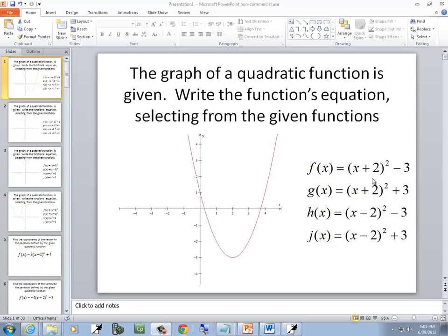Now, if the number's inside with the x, then it shifts left or right opposite what you think, unless you think backwards. This plus 2 would make me think it goes right 2, so it's really left 2. And this one, the minus 2, makes me think it's left 2, so it's really going right 2.